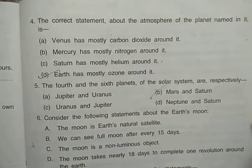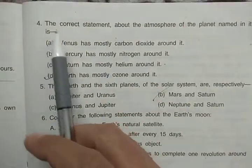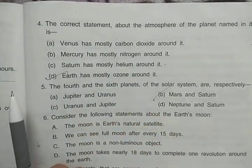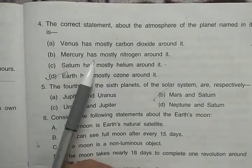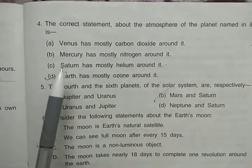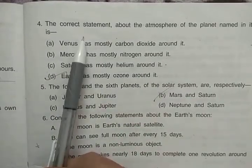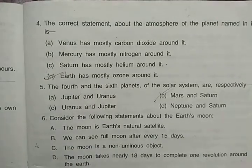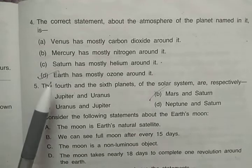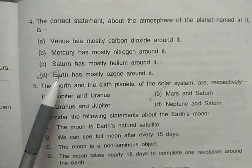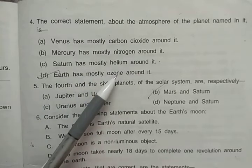The correct statement about a planet's atmosphere: Venus has mostly carbon dioxide around it; Mercury has mostly nitrogen around it; Saturn has mostly helium around it; Earth has mostly ozone around it. The correct statement is that Earth has an ozone layer, so 'Earth has mostly ozone around it' is correct.